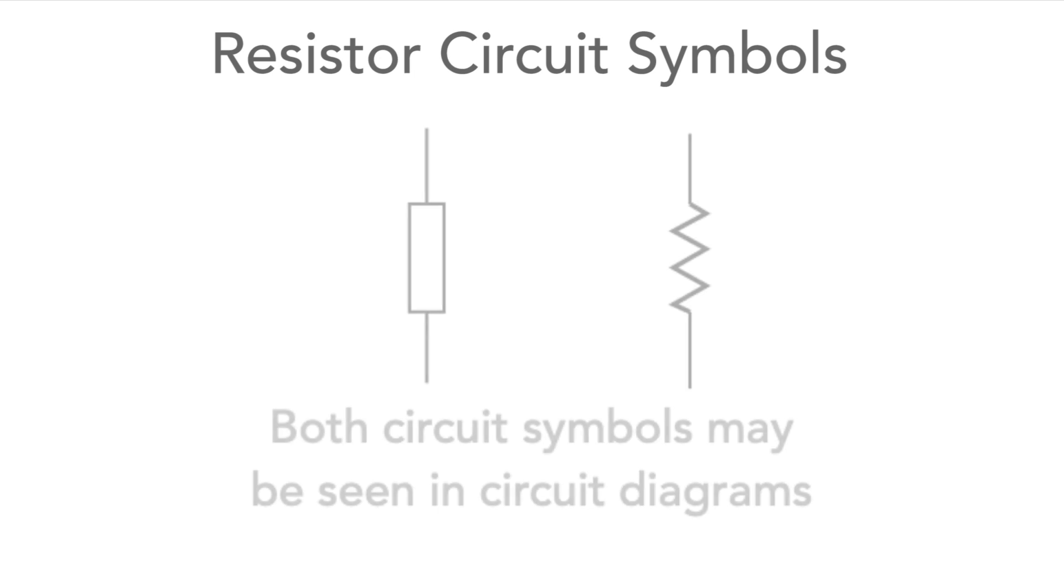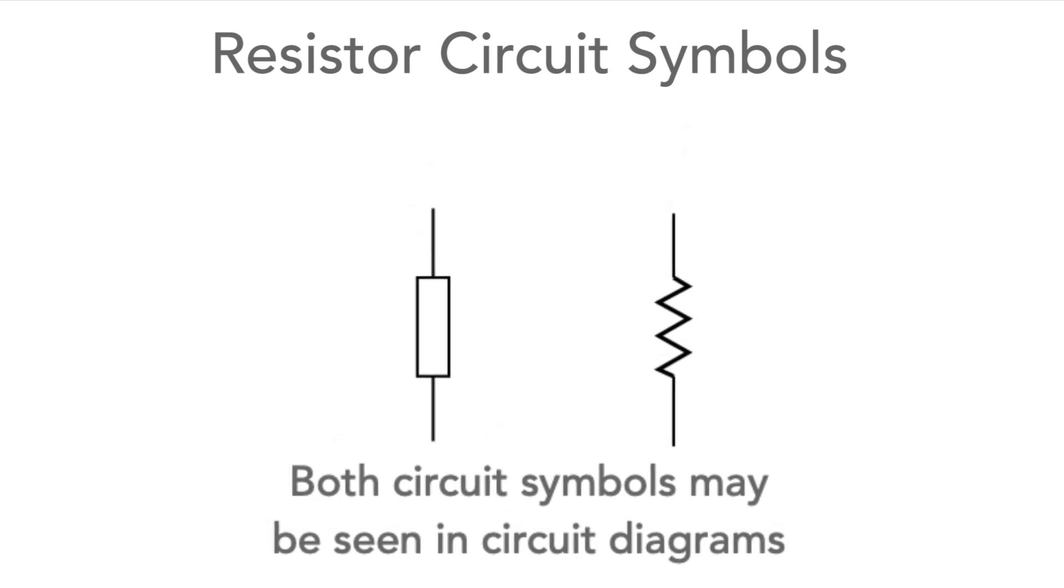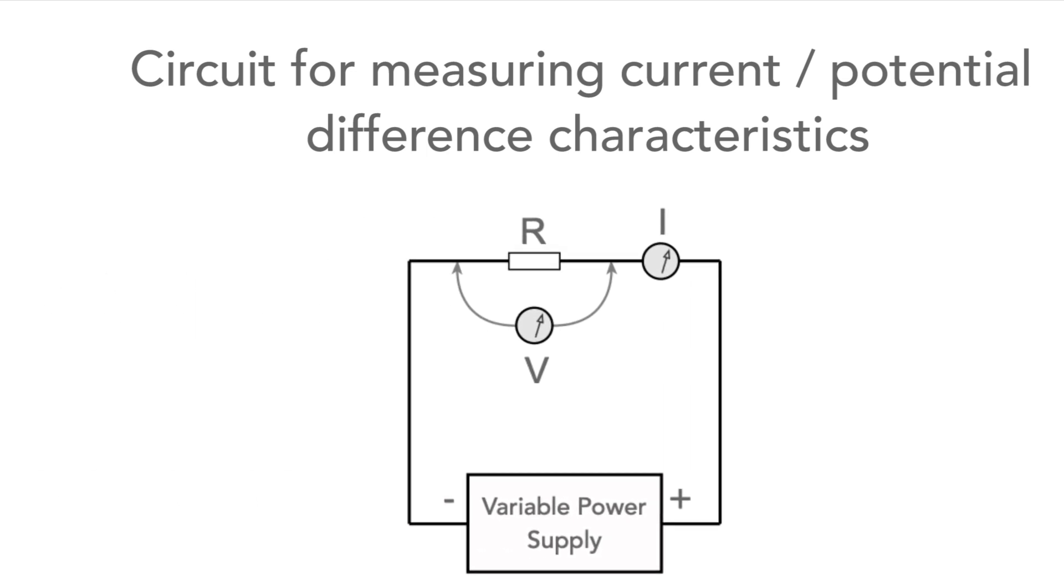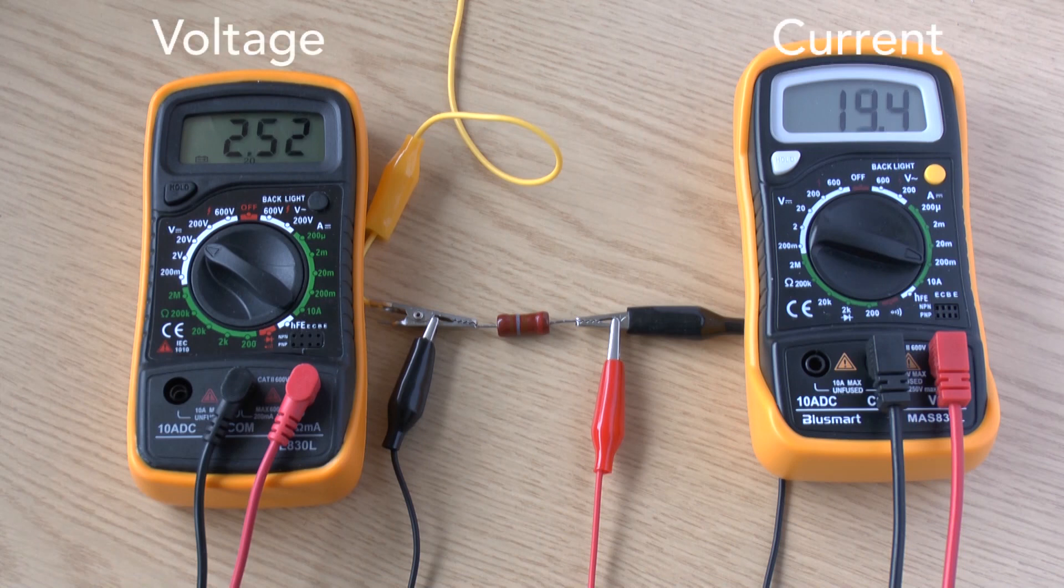First of all it's best to look at a more straightforward component such as a linear resistor. It's possible to measure the current and voltage relationship using a simple circuit. With two meters, one set for current and the other for voltage, the actual values can be measured.